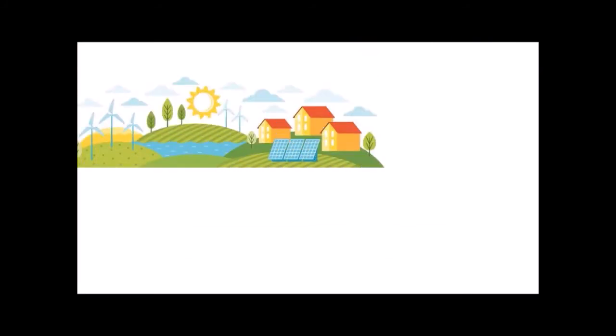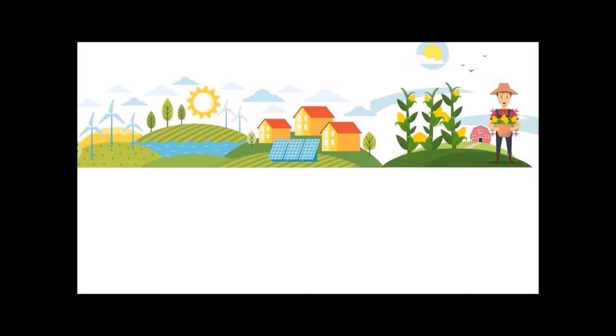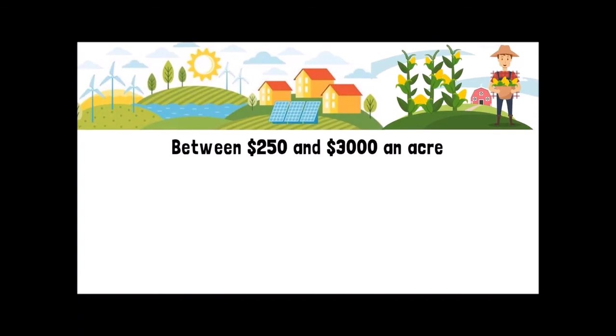It's important to know though that not all farmers own their own solar farm. Many farmers will simply rent their land to the power company. By doing this, the farmer doesn't need to worry about taking care of the system or the cost of setting it up. Solar land leases pay between $250 and $3,000 an acre.